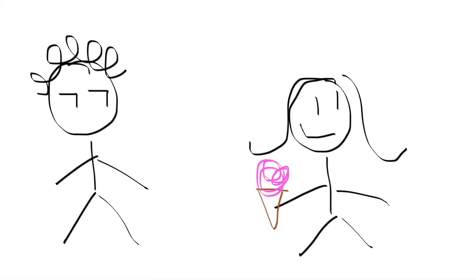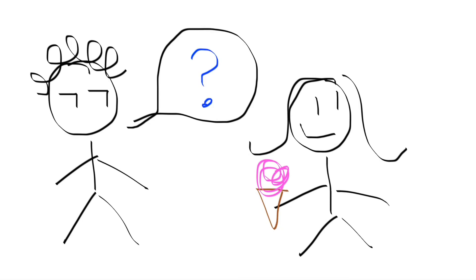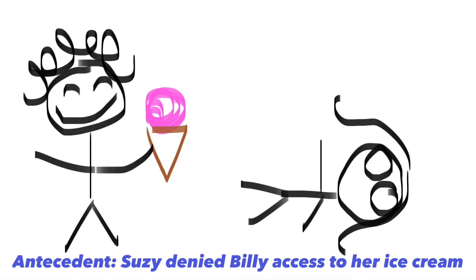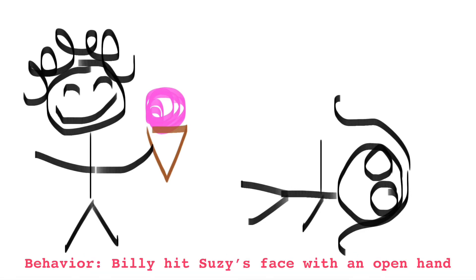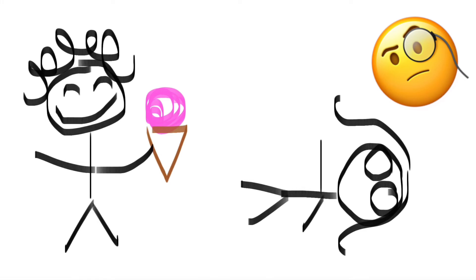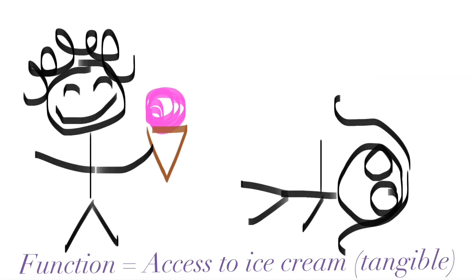Here's how it works. Say that Billy sees Susie's ice cream and thinks he should have it, so he says, 'Can I have the ice cream?' To which she responds, 'No, it's mine.' So then Billy whacks her in the face, and Susie is so shocked that she lets him have the ice cream. The antecedent was that Susie denied Billy access to her ice cream; the behavior was that Billy hit Susie's face with an open hand; and the consequence was that Billy got access to the ice cream. If a BCBA observed this happening every day for a week, she could hypothesize that the function of this behavior is access to ice cream.